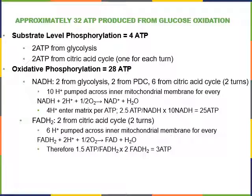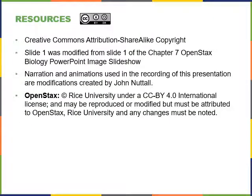That gives us 28 ATP total from oxidative phosphorylation, and 4 ATP from substrate level phosphorylation, for a total of approximately 32 ATP that can be produced from glucose oxidation.